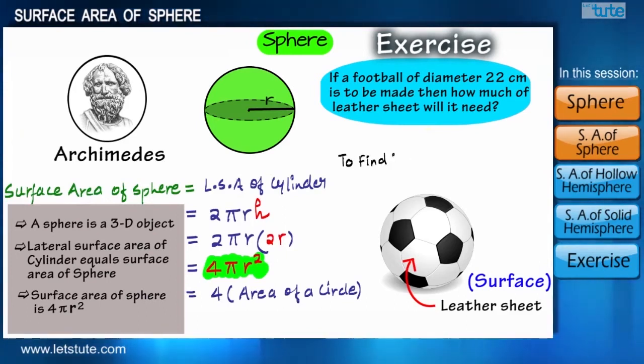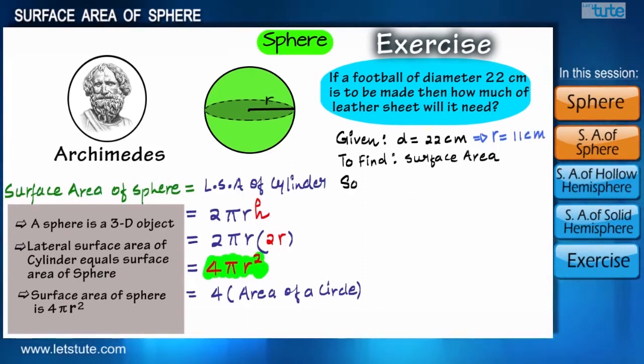So for finding out the requirement of leather sheet, we will find out the surface area of this football, and for that we need only one parameter: the radius. Here we have to make the football of diameter 22 centimeters, that means radius is 11 centimeters.